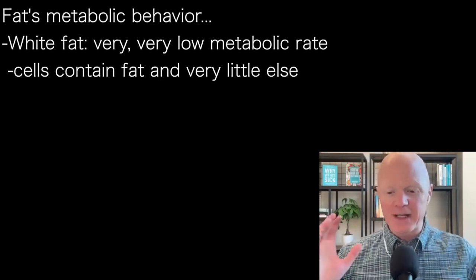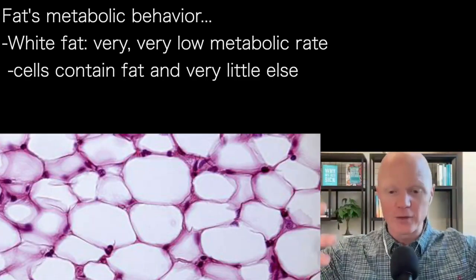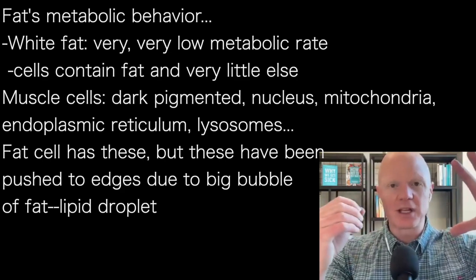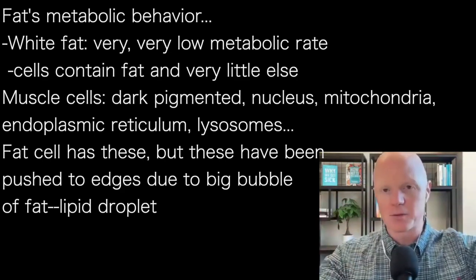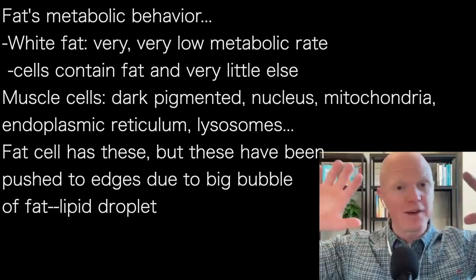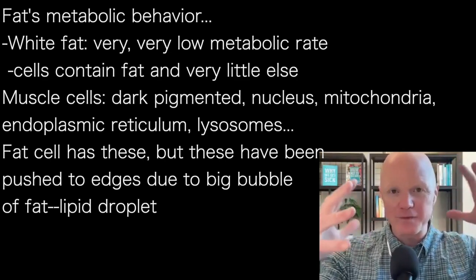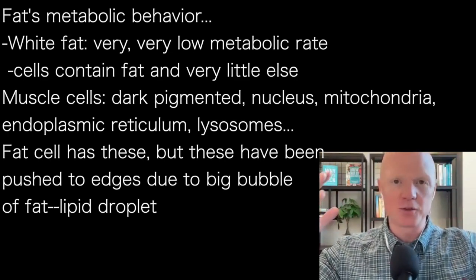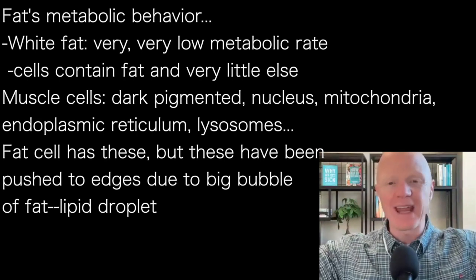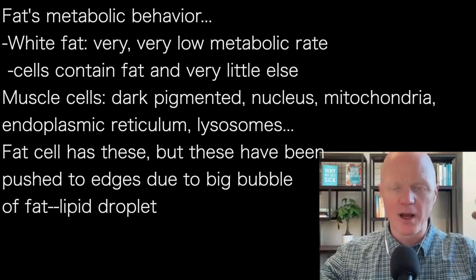You see practically nothing else. If you look at fat cells under a microscope, all you see is this big round blob. If we were to look at muscle cells, it's a very busy thing — very dark pigmented because you're getting the nucleus, lots of mitochondria, lots of endoplasmic reticulum, lysosomes, and all kinds of other parts of the cell. But within the fat cell, all of that has been pushed to the edges because there's this big bubble of fat filling up the fat cell. It is called the lipid droplet — one big fat lipid droplet — and everything else, the nucleus, the mitochondria, and all the other organelles, has been pushed up to the very edges. So you only see this big blob of fat.